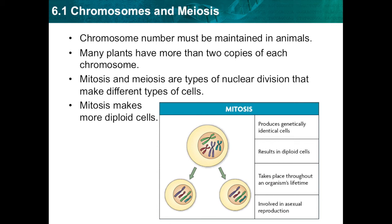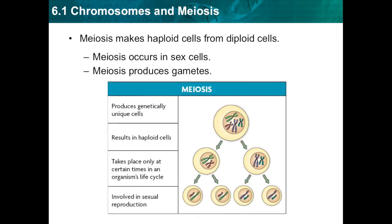Now we're going to talk about meiosis. The germ cells in your reproductive organs form gametes through a process called meiosis. Meiosis is a process that divides a diploid cell into haploid cells. Remember that mitosis results in two identical diploid cells and is used for development, growth, and repair. In contrast, meiosis results in four haploid cells that are unique, and meiosis happens only in germ cells to make gametes. Meiosis produces genetically unique cells, results in haploid cells, takes place only at certain times in an organism's life cycle, and is involved in sexual reproduction.